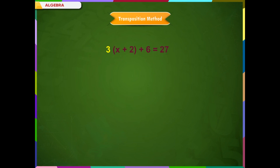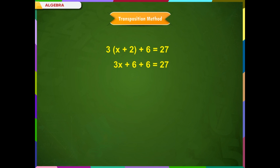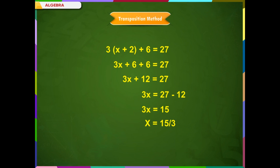Solve the following equation: 3x plus 2(x plus 6) equals 27. First, we will open the bracket. So, 3x plus 2x plus 12 is equal to 27, giving 5x plus 12 equal to 27. Now, keep the variable term on the left side and take the constants on the other side. Therefore, 5x equals 27 minus 12, so 5x equals 15. We want to keep the variable alone on the left side. Therefore, x equals 15 divided by 5, and so x is equal to 3.